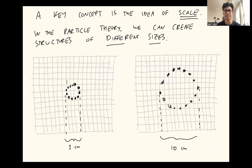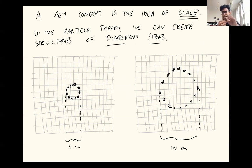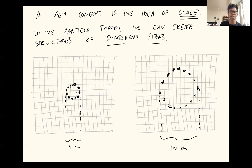A key concept here is the idea of scale. In this particle theory, it's a fact that we can create structures of different sizes. Let me imagine taking some of my particles and arranging them into a circle of size one centimeter. I can do that. And now let me imagine taking these particles and expanding the circle a little bit — arranging them into a different circle which is now not one centimeter big but, say, 10 centimeters big. So there are two different sorts of structures I can create: a small one and a big one. Of course, you can imagine making bigger and smaller and more intricate structures too.